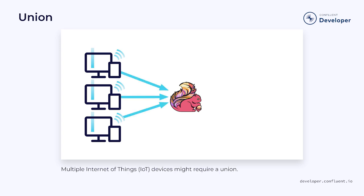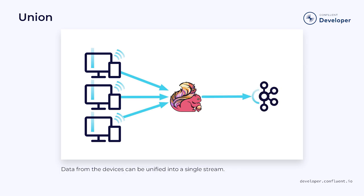As an example, pulling telemetry data from Internet of Things devices might warrant a union. Each device could emit the same type of data, and we need to collect that data and unify it into a single stream.